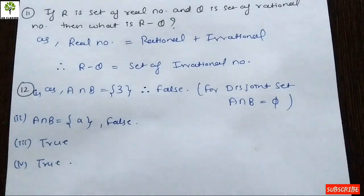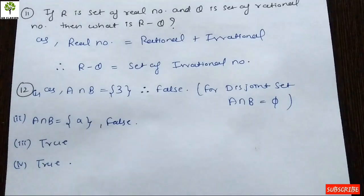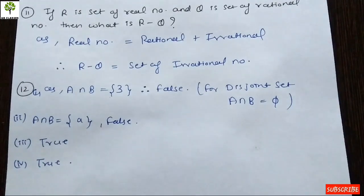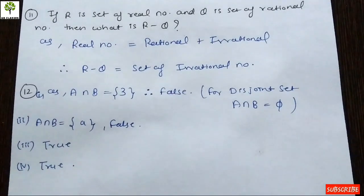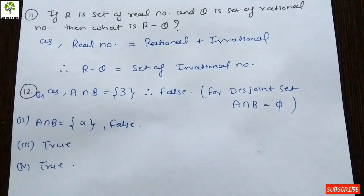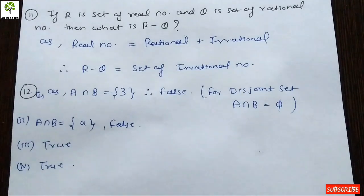So R minus Q equals the set of irrational numbers. It seems tough but is very easy if you know that real numbers are simply the sum of rational and irrational numbers. Now looking at question number 12, we need to determine whether each statement is true or false with justification. The first part asks if {2, 3, 4, 5} and {3, 6} are disjoint sets.